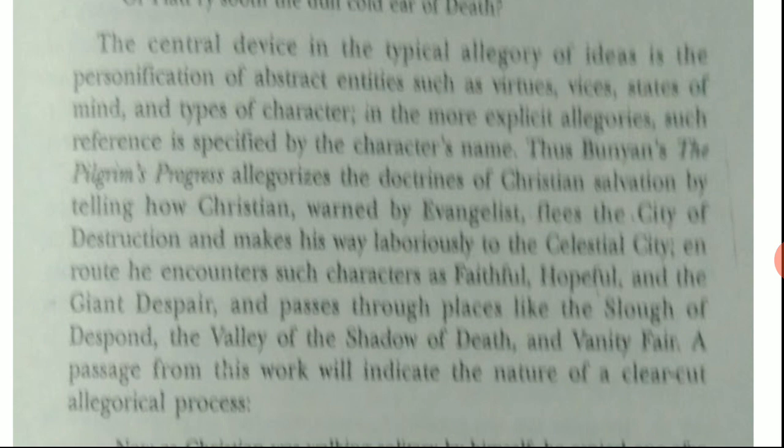Even the naming of places may also be allegorical. Examples here are taken from Pilgrim's Progress written by John Bunyan, where we have the City of Destruction and the Celestial City — places which represent the sinful and the holy.